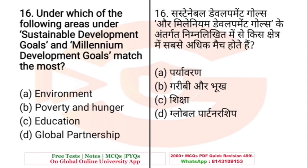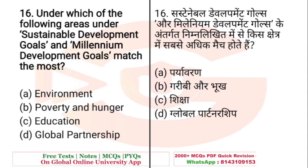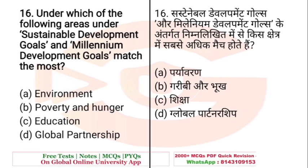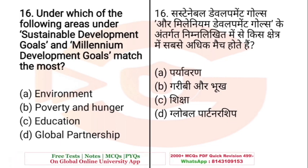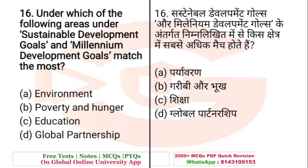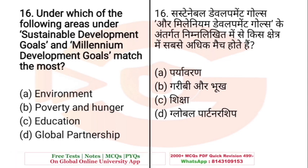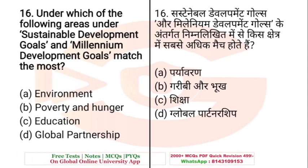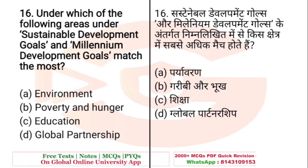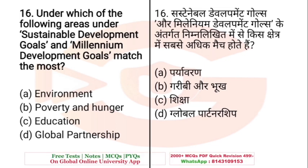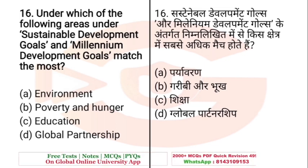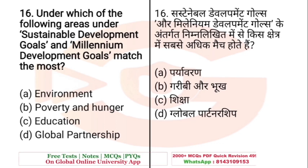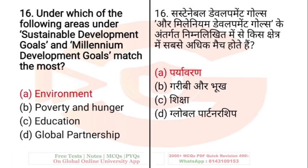Question: Under which of the following areas do Sustainable Development Goals and Millennium Development Goals match the most? A. Environment, B. Poverty and Hunger, C. Education, D. Global Partnership. Among these, which points match between SDGs and MDGs? The right answer is Environment.